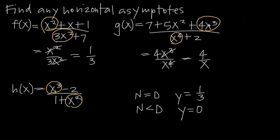Here we had x cubed and x to the 4th — only 1 degree difference — but this rule holds no matter what the difference is in degrees. For example, if we had x cubed in the numerator and x to the 7th in the denominator, we'd have a 4-degree difference and end up with 4 over x to the 4th. But making x very large still drives the denominator much larger than the constant numerator, so the horizontal asymptote is still y equals 0. If the degree of the numerator is less than the degree of the denominator, the horizontal asymptote is always y equals 0.